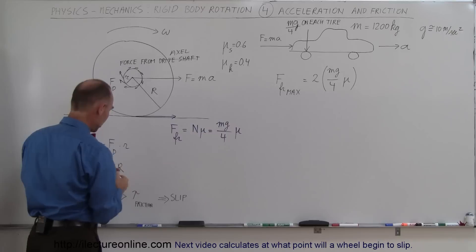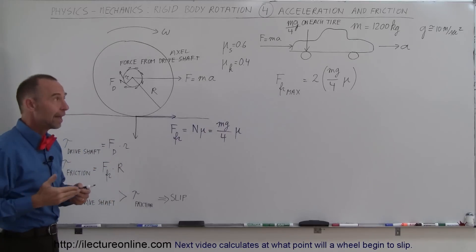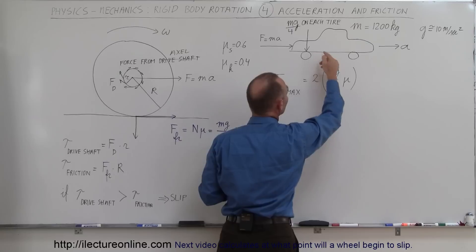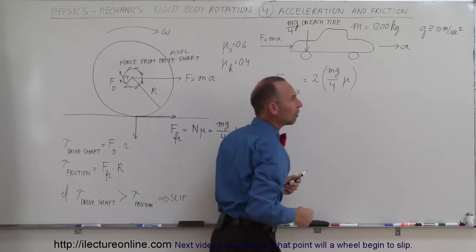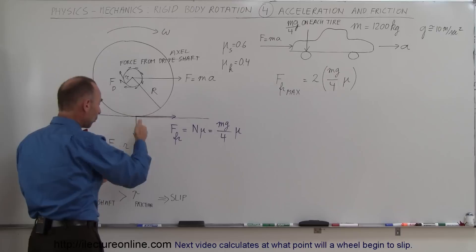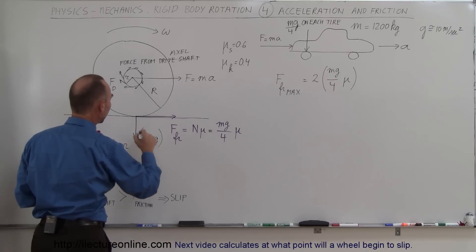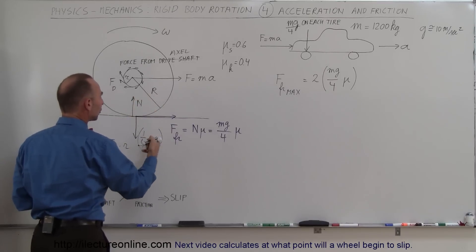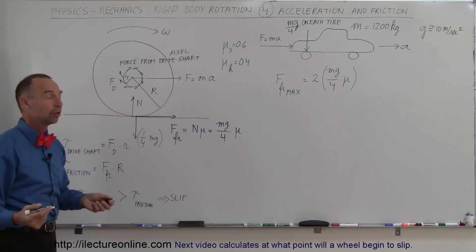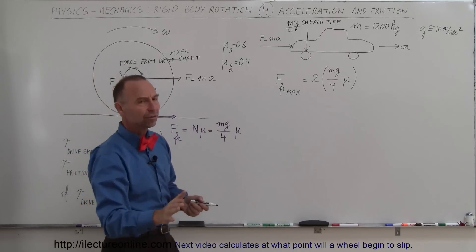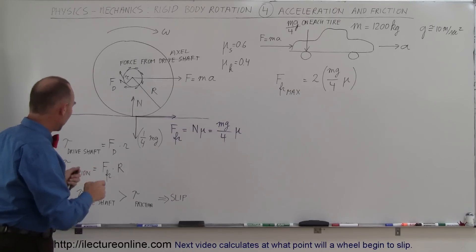How much friction is there between the tire and the road? The friction force is the normal force times mu. The force pushing down is not the whole weight of the car because the car sits on four wheels. Assuming the weight is equally distributed among all four tires, the weight on each tire is one-fourth the weight of the car, and the normal force is also one-fourth the weight. Assuming the car's mass is 1200 kilograms and g equals 10 m/s².